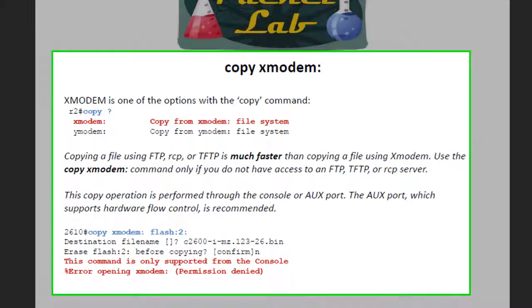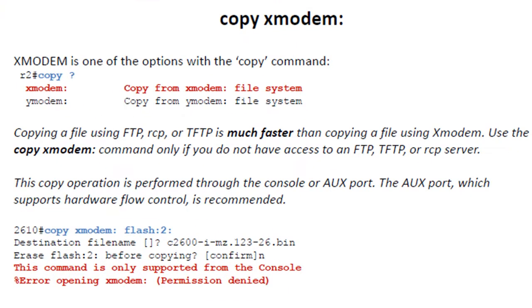Xmodem is actually one of the copy options. If you're going to copy the image to your flash or whatever RAM you're using, you just issue the copy command followed by a question mark, and you can see that both X and Y modem are available. The full command would be 'copy xmodem' and then where you want to put the file — in this case, it's flash 2 on the 2610 — and then you specify the image. It will ask if you want to erase flash. Generally not, and then you hit enter.